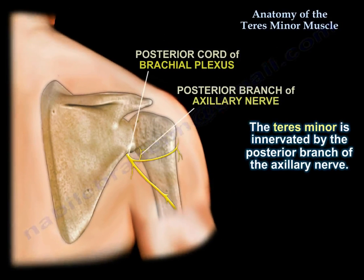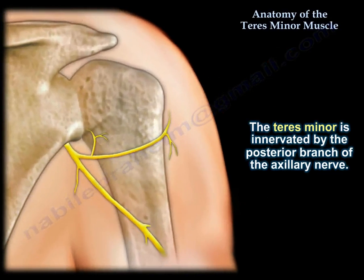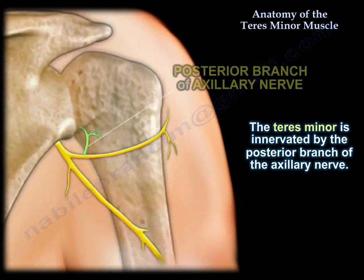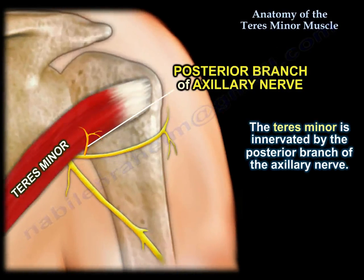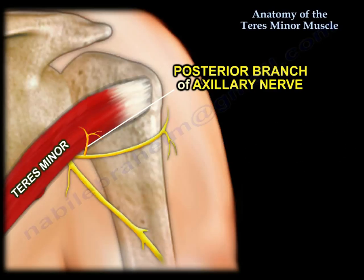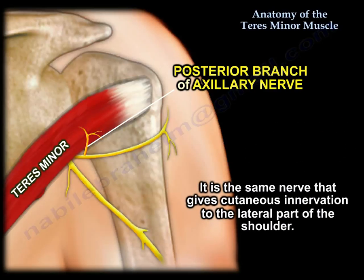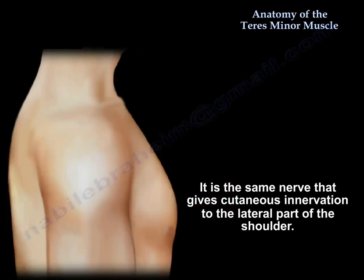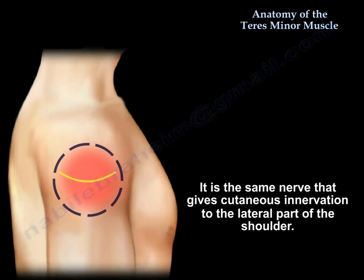The Teres Minor is innervated by the posterior branch of the axillary nerve. Here you can see in this diagram the posterior branch of the axillary nerve supplying the Teres Minor. It is the same nerve that gives cutaneous innervation to the lateral part of the shoulder.